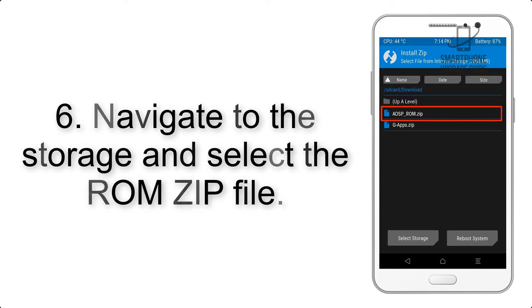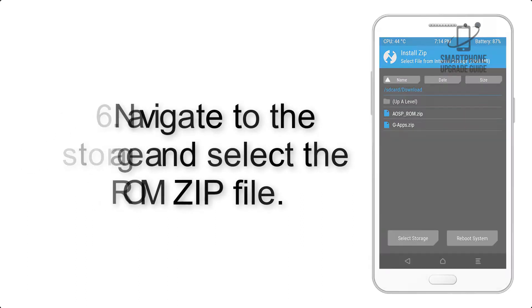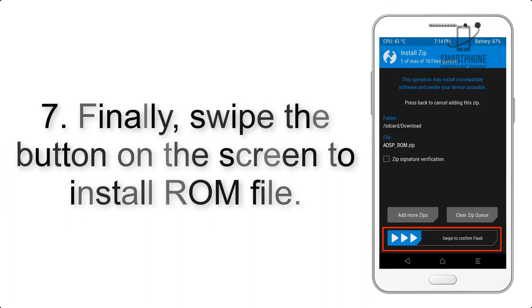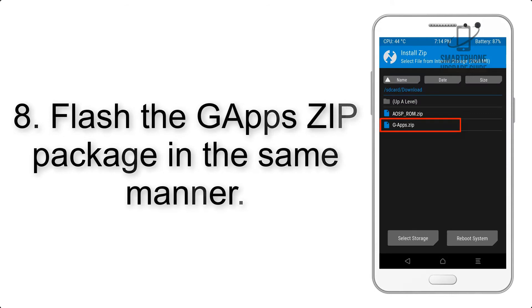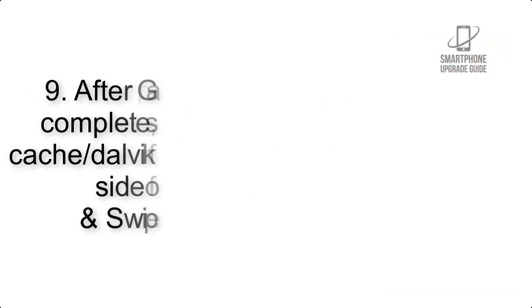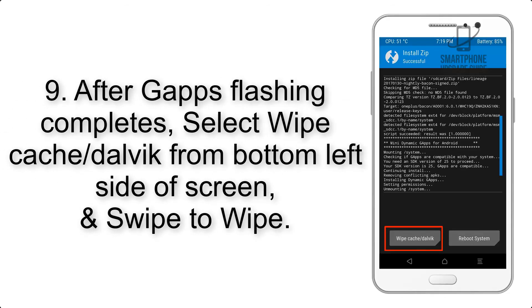Step 6: Navigate to the storage and select the ROM zip file. Step 7: Swipe the button on the screen to install the ROM file. Step 8: Flash the GApps zip package in the same manner. Step 9: After GApps flashing completes,